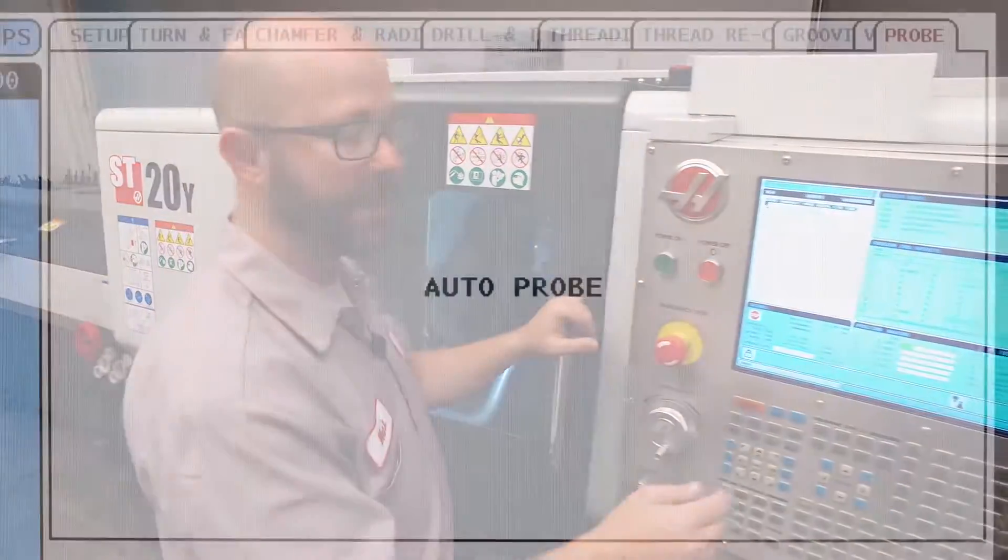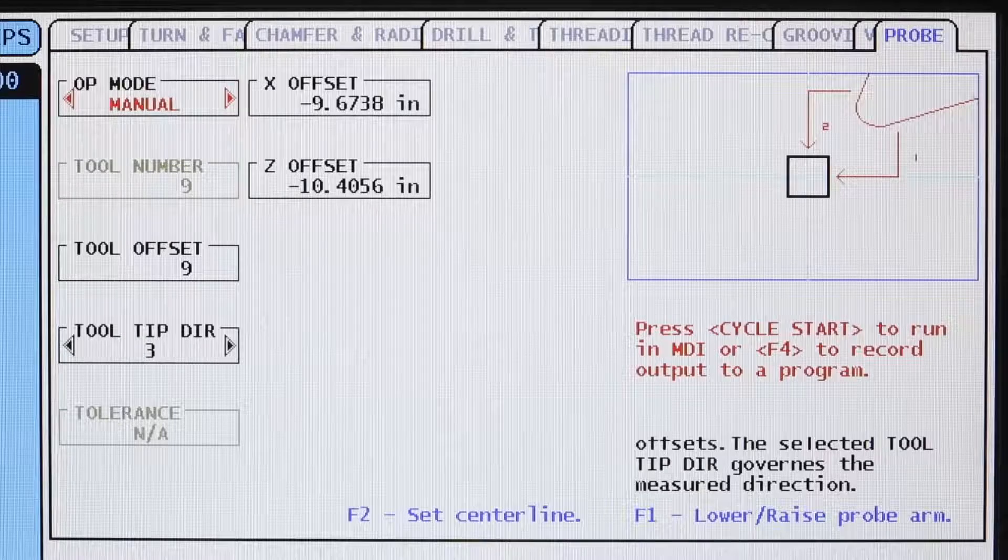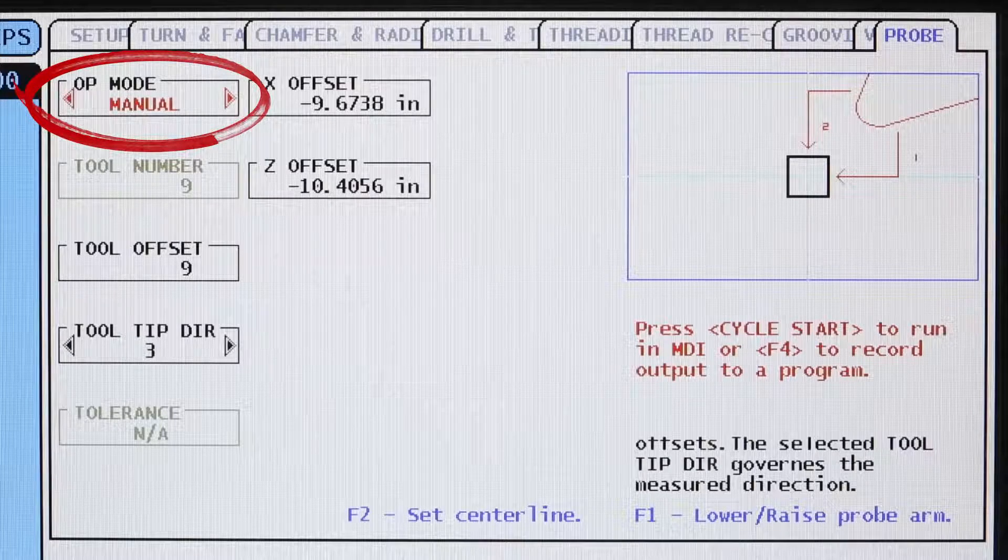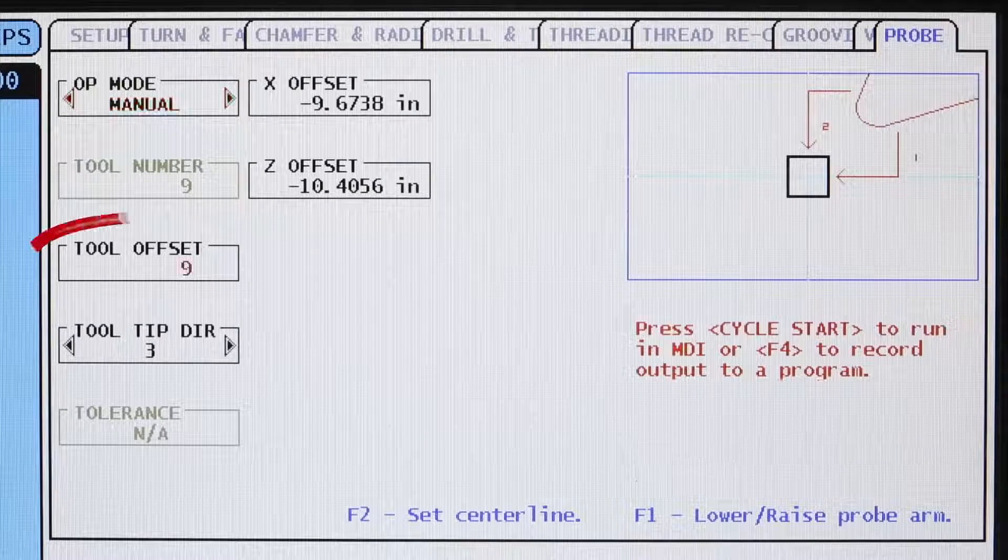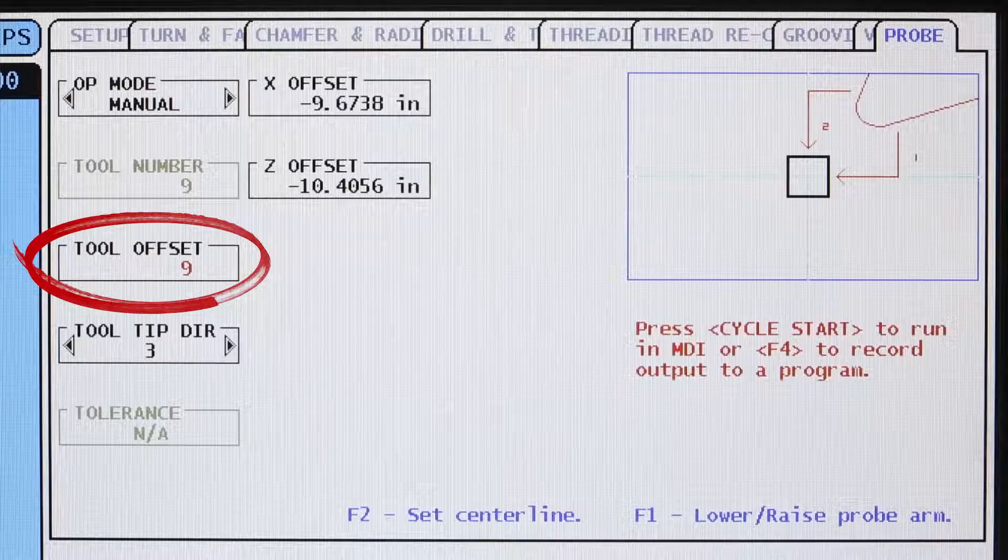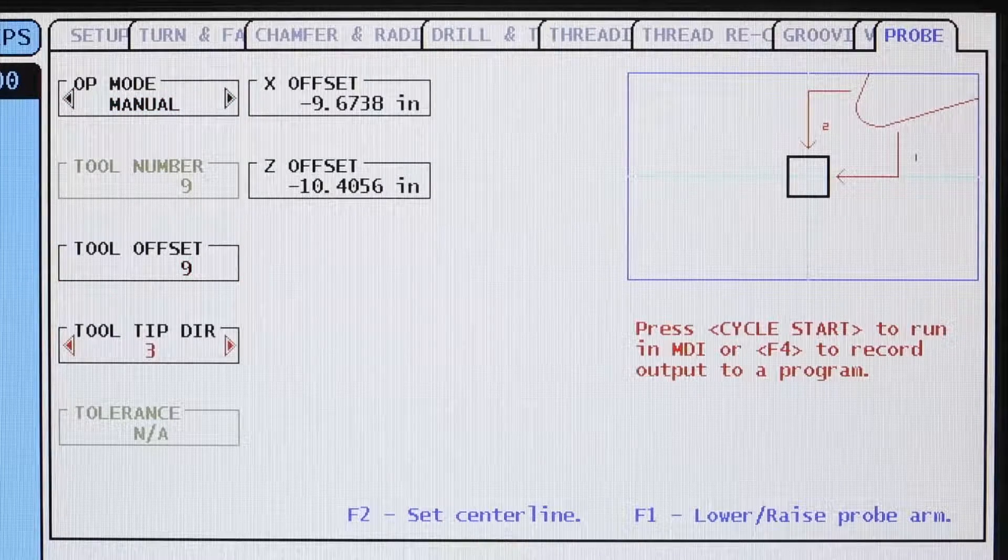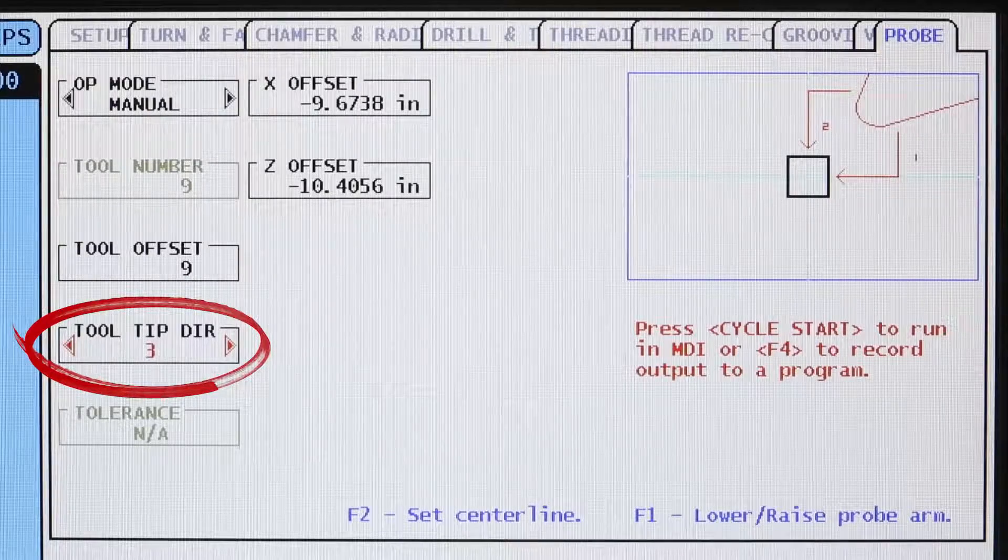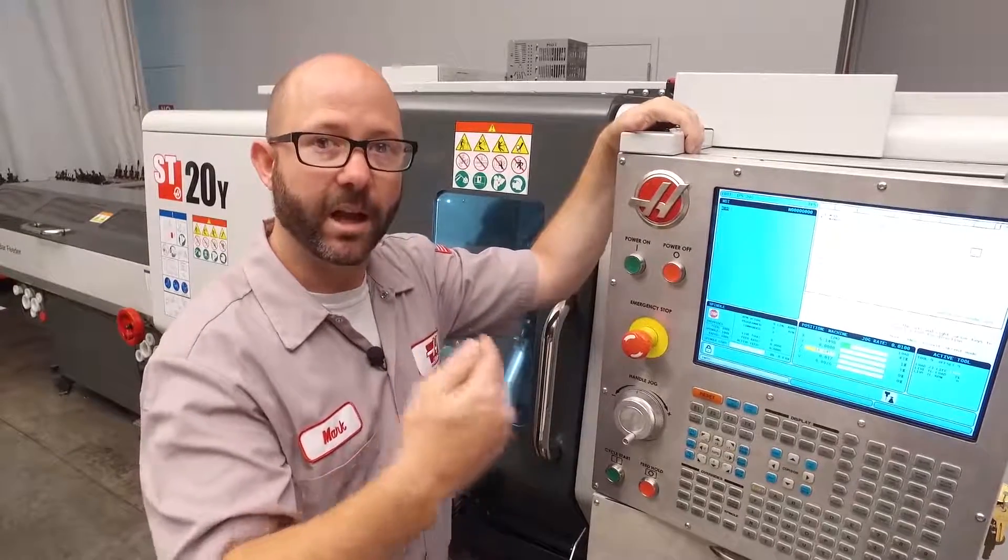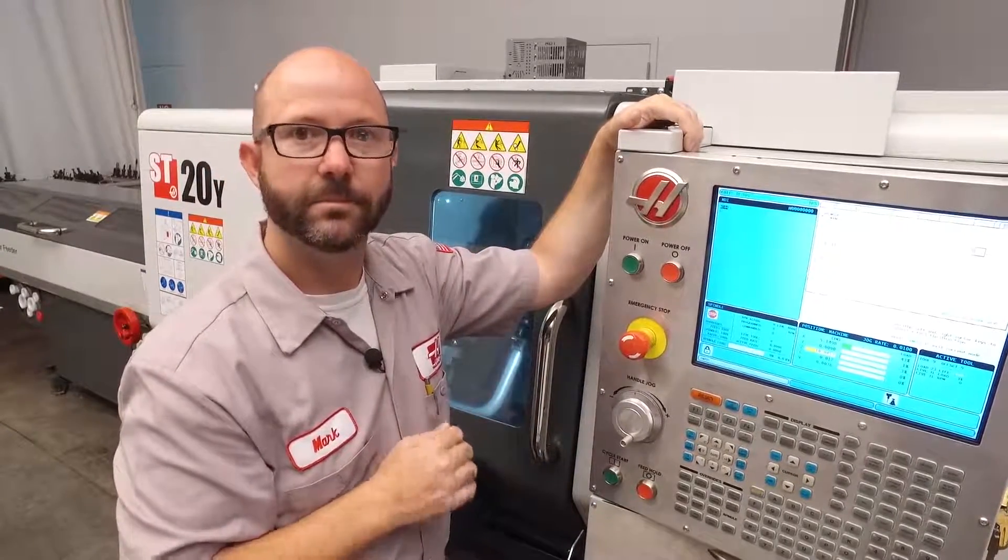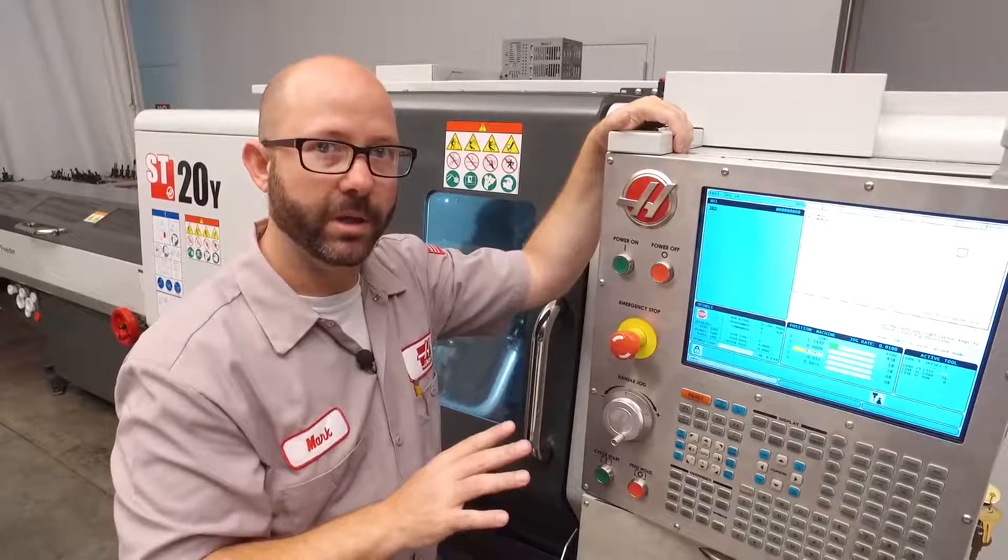I'm using an M134 not an M133 because I want my live tooling to spin backwards not forward. Okay. So with this program active in memory I'm going to go to the IPS probing page. I'm going to select manual cycle because I've already jogged my tool above my probe. I'm going to use tool offset nine because I'm probing tool nine. And here's the important part. I'm going to use tool tip direction three. Now this is the same cycle we would use for an OD turning tool. It's going to come in from the right and come down in the X. Which is going to work just great for our end mill.